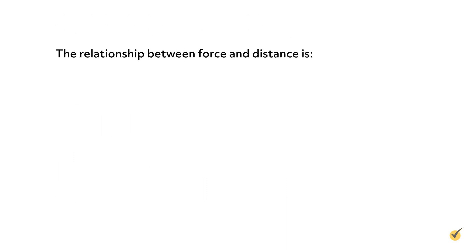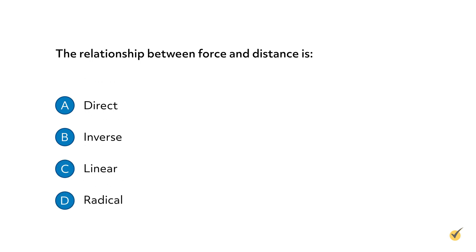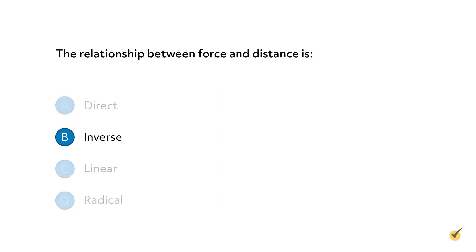Number three: the relationship between force and distance is a) direct, b) inverse, c) linear, or d) radical. The correct answer is b. Looking at Fin equals Fout times Dout over Din, it is easily seen that as Dout increases, Fout decreases. That's all for this review. Thanks for watching and happy studying.